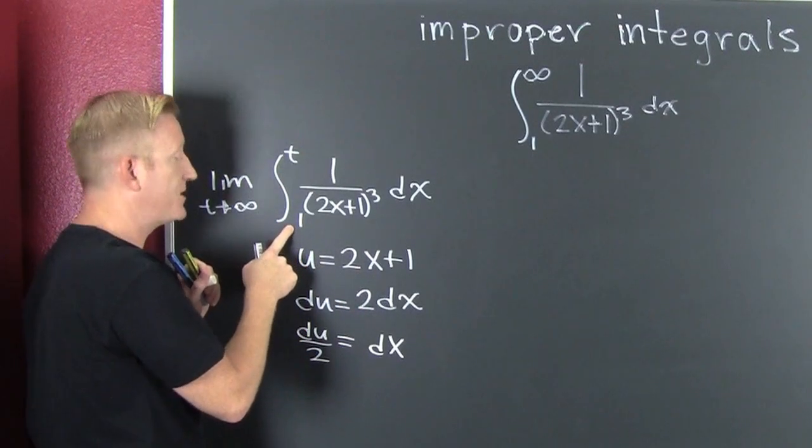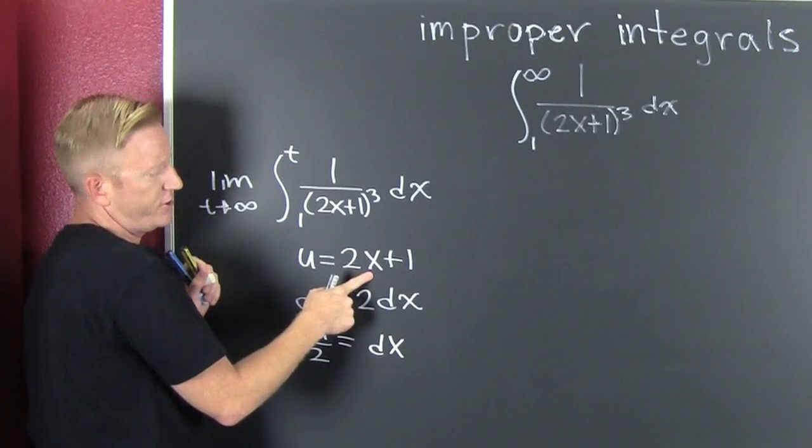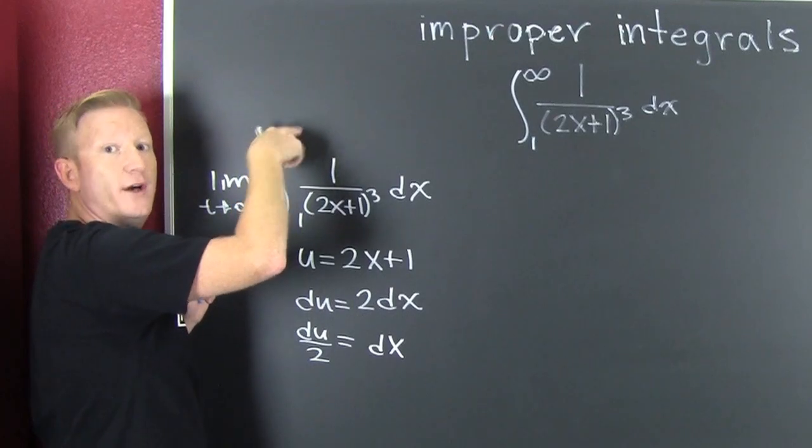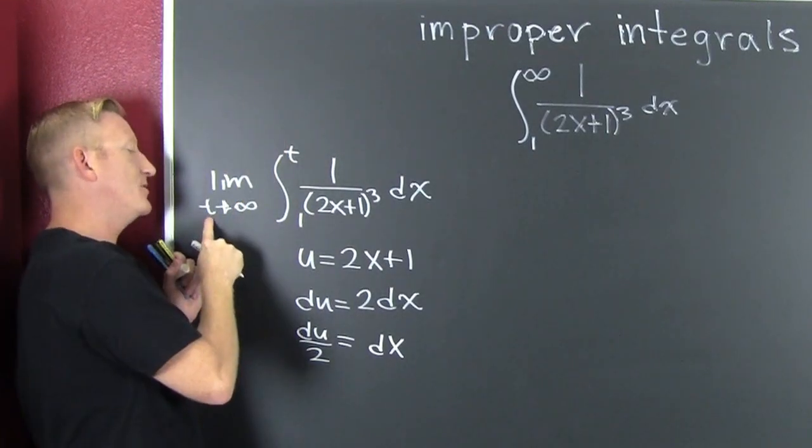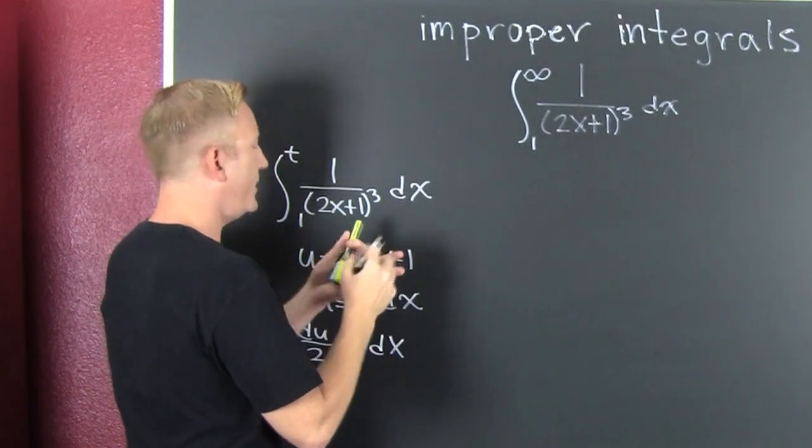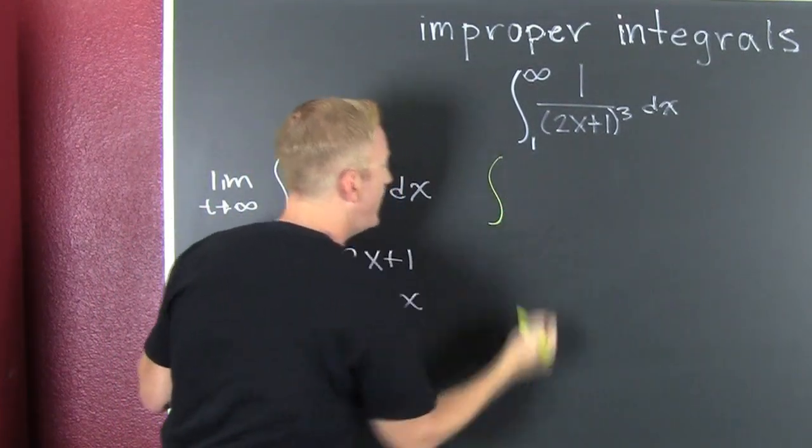I could change the limits by plugging them in there, sure. So then that bottom one would be 3 and that top one would be 2t plus 1, but let's not do that. We'd have to change it over here. So let's just create a new integral, just this one.